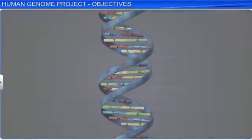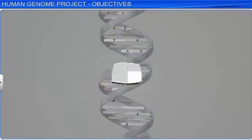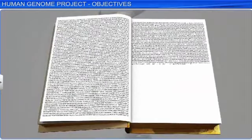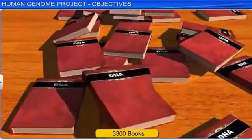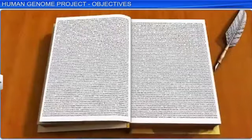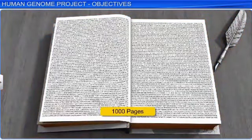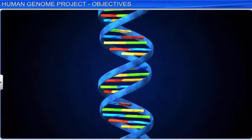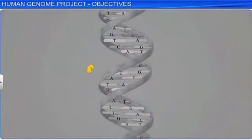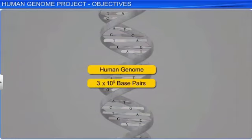If we stored the entire DNA sequence of a single human cell in books, we would have 3,300 books, each with 1,000 pages, where every page contains 1,000 letters. Yes, a human genome, which has about 3 × 10⁹ base pairs, can produce such an enormous amount of data.